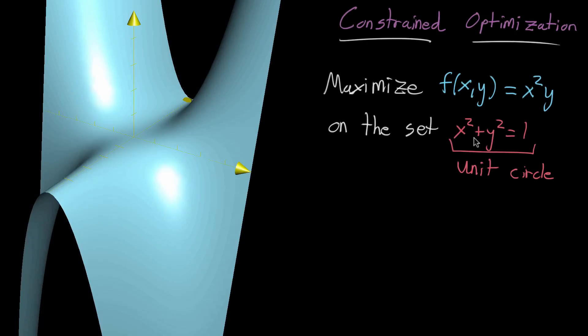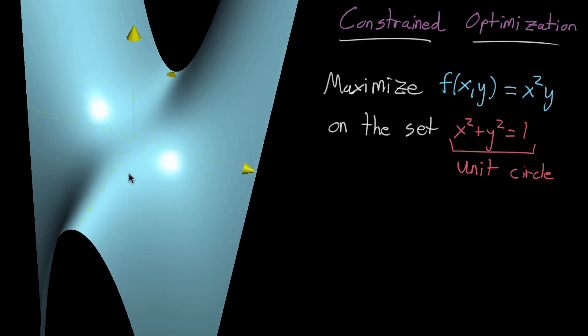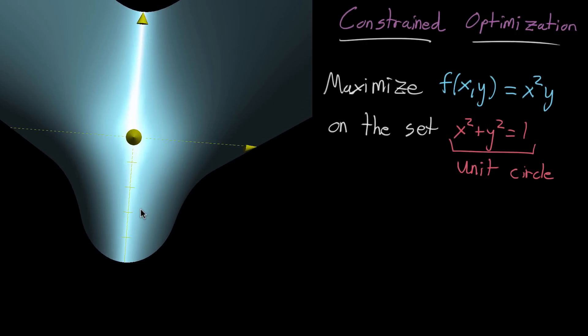And now this constraint, x squared plus y squared, is basically just a subset of the xy plane. So if we look at it head on here, and we look at the xy plane, this circle represents all of the points xy such that this holds.